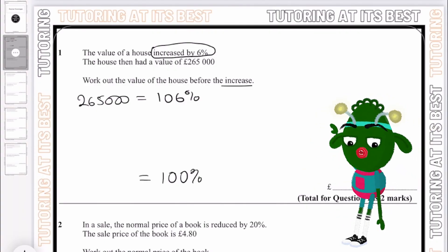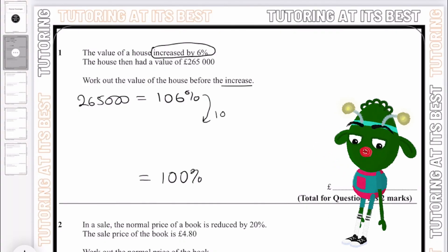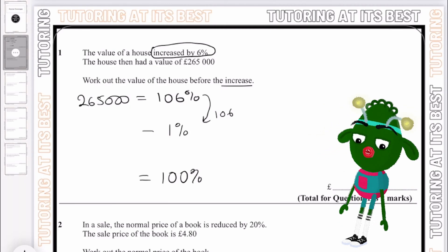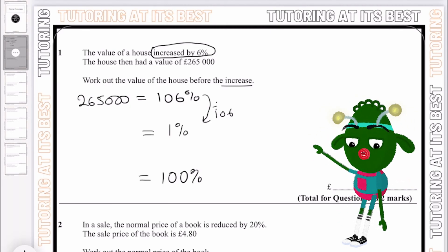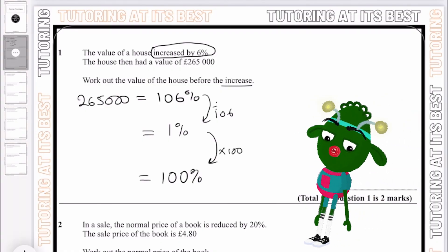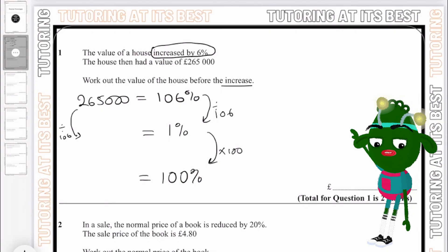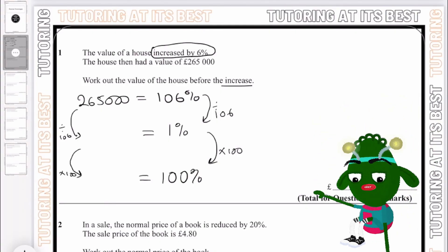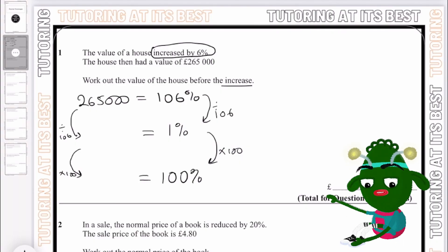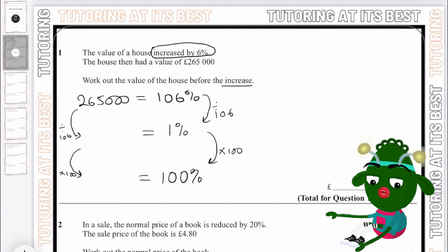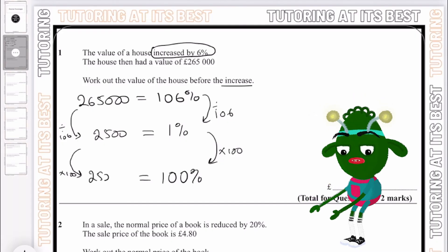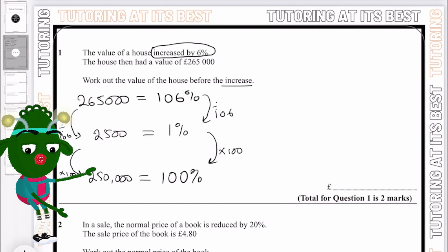The first thing I'm going to do is divide both sides by 106 in order to get 1%, and then times this by 100 and that will give me 100%. So we get £265,000, divide it by 106, get our answer and then times this by 100. I know that £265,000 divided by 106 gives us £2,500, and then times by 100 that's £250,000. So now I know that the value of the house before the increase is £250,000.